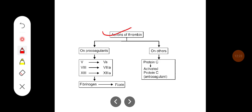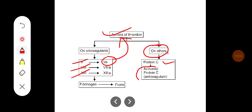Thrombin helps in the conversion of inactive Factor 5, Factor 8, and Factor 13 into their active forms. Active Factor 5 further helps in conversion of prothrombin into thrombin, acting as a positive feedback mechanism for more thrombin generation. Thrombin also acts on the fibrinolytic system by converting inactive Protein C into activated Protein C, which is a potent anticoagulant.